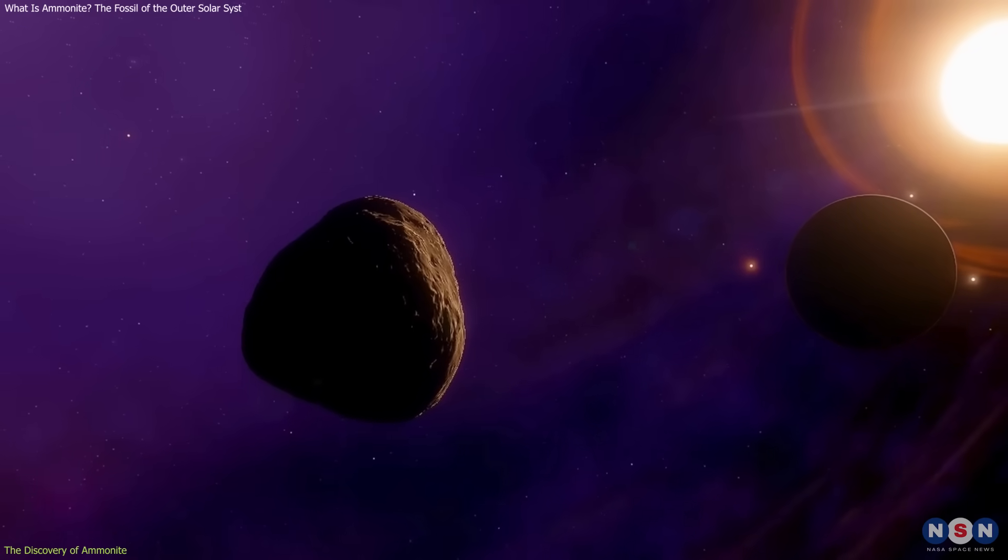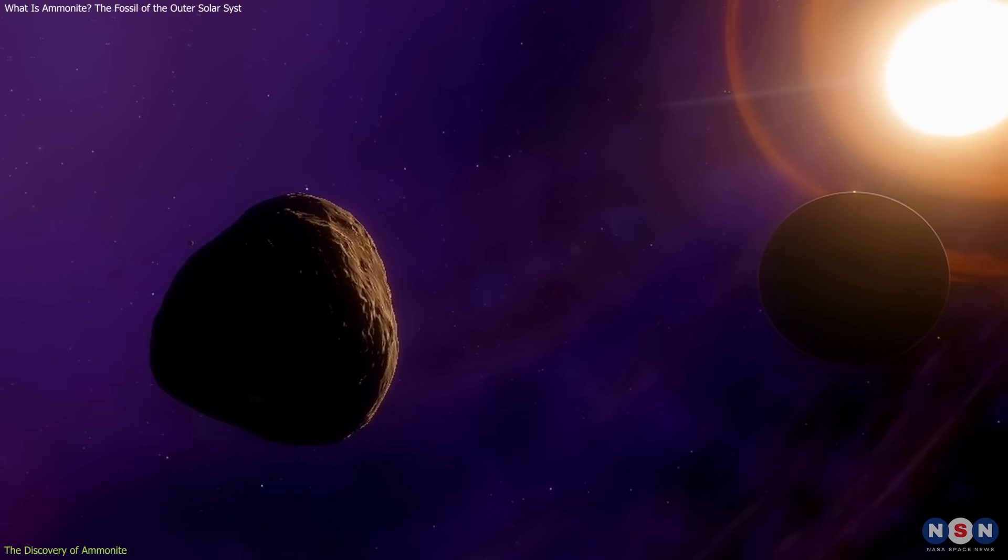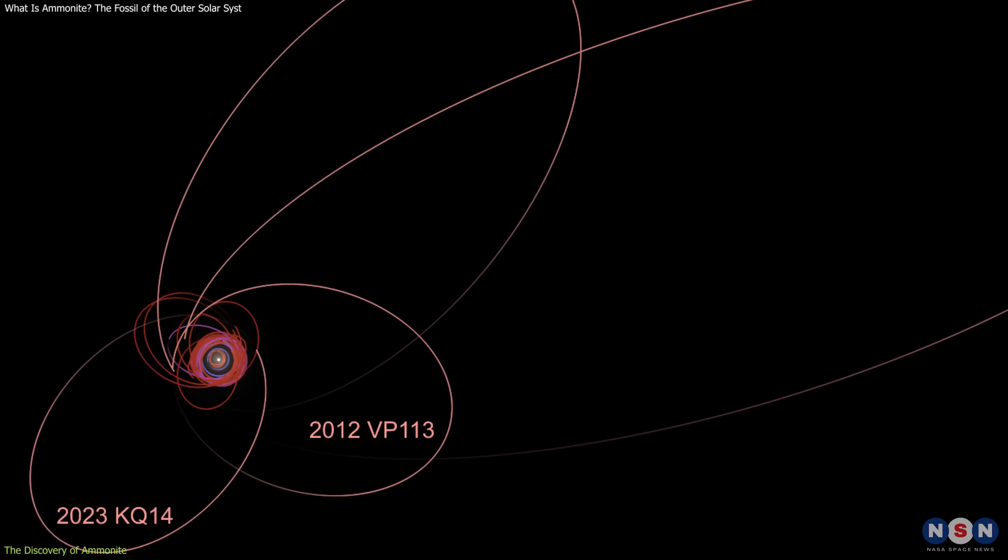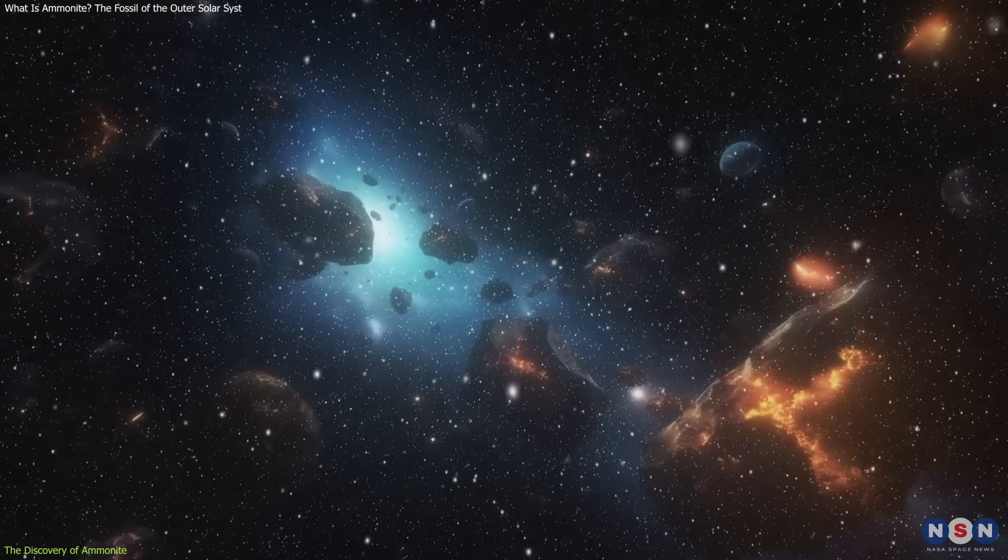What truly caught scientists' attention wasn't its distance, but its unexpected orbital angle. Unlike the others, its path points in a different direction, hinting at a gravitational history that doesn't match the rest.